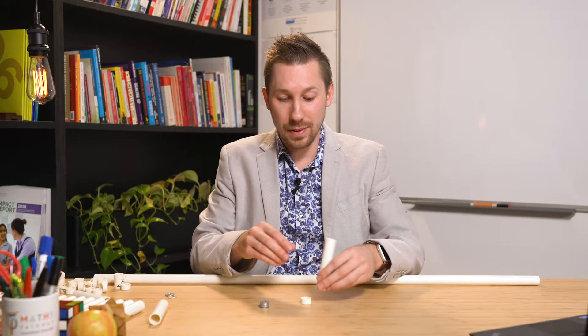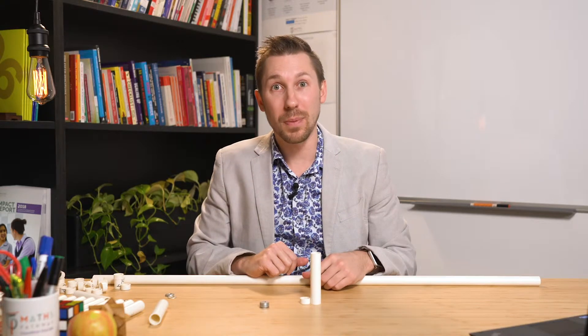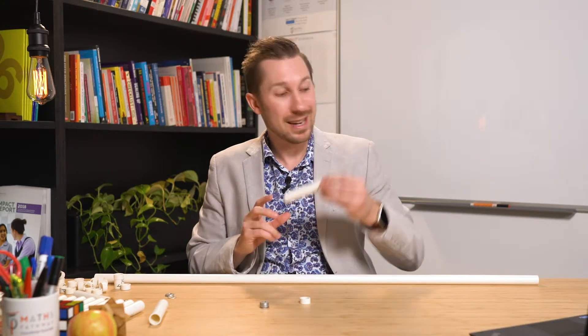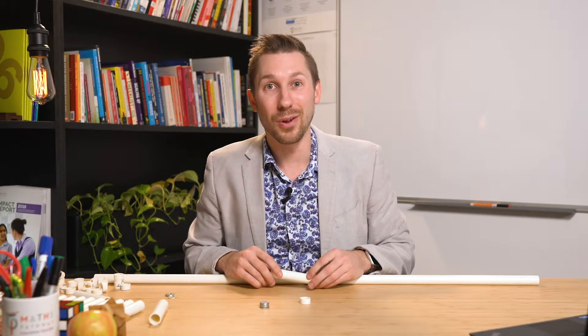And then once you've got the hundredths, you get ten of those and line them up and you chop out a tenth. And then once you've made your tenths, it's quite easy to go along and make a one.